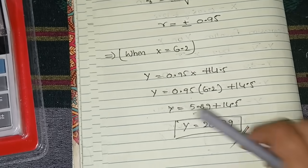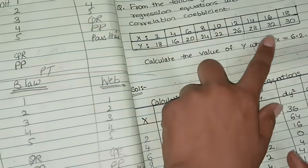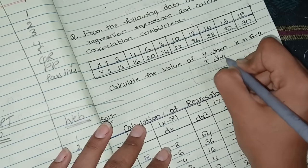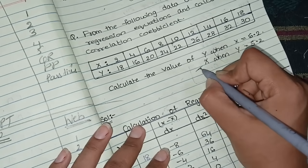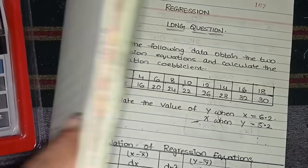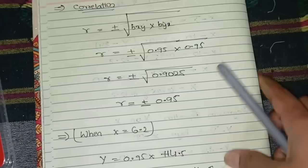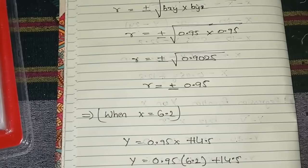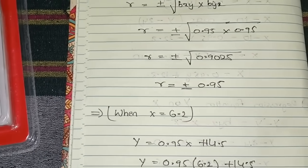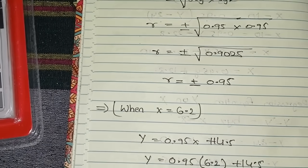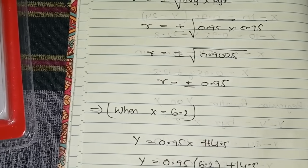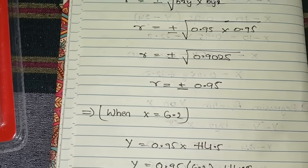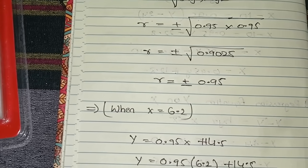For homework: calculate x when y = 5.2 using the regression equation x on y, and comment your answer below. I hope you got clarity about this topic. If you have any doubts, comment in the comment section. Notes PDF are available in the Telegram group — the link is in the comment section. All the best! If you liked this video, please like, share, comment, and subscribe. See you in the next video, bye bye students.